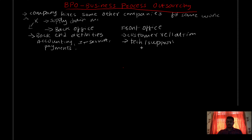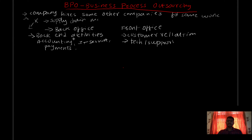For example, a company is developing a bank software. The company's technical support is outsourced by a BPO company. The BPO company handles the bank-related technical support. BPO has a great benefit for both the manufacturing company and the main company.